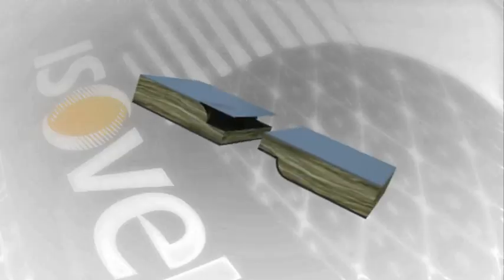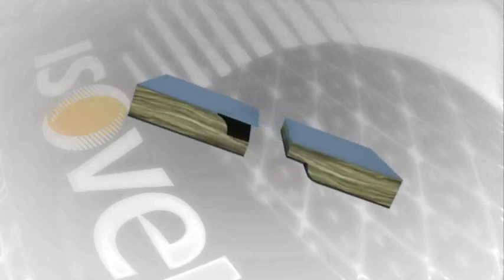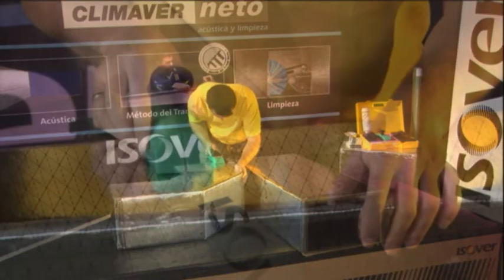A unique male-female edge design allows precision, airtight ducts to be formed. Note that the male shiplap also has a foil overlap on the outside face, guaranteeing a better joint between the KlimaVair boards.